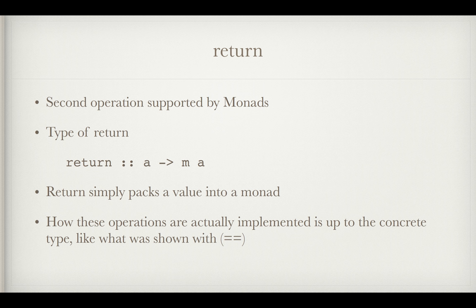So the second operation supported by monads is this return operation, which is pretty simple. It's just a wrapper function. So you give return an A and it'll give you back an MA, a packed value. It'll put A in the box for you and give you back the box with A in it.